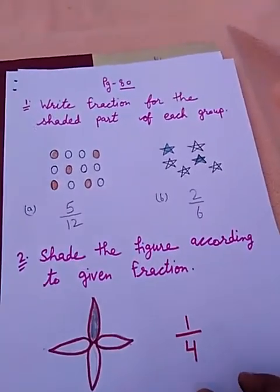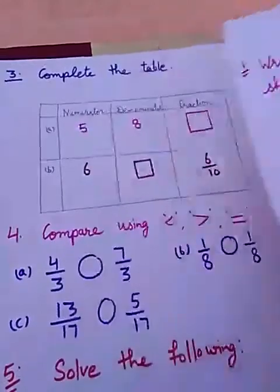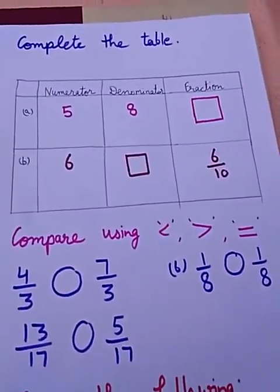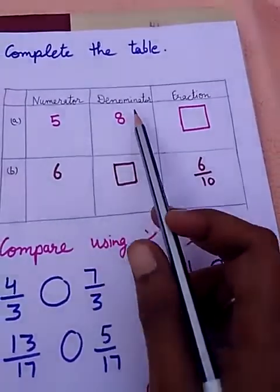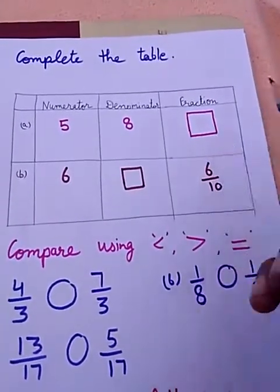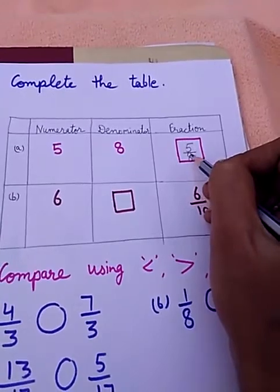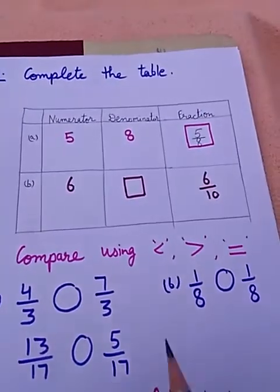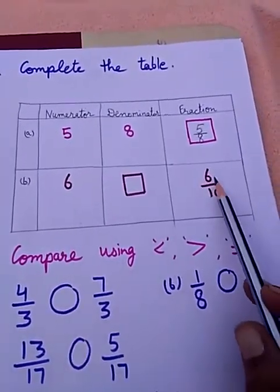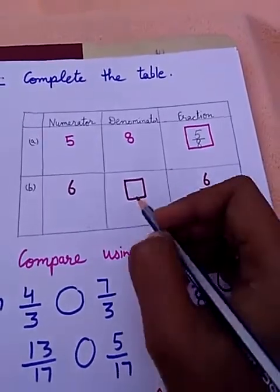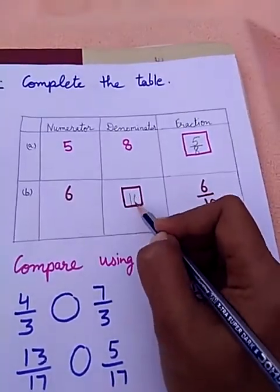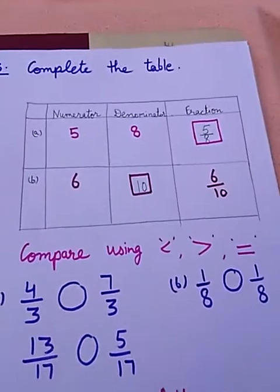Now come to the third question. Complete the table. Numerator is 5, denominator is 8, then the fraction is 5/8. Now numerator is 6, fraction is 6/10, so the denominator is 10.